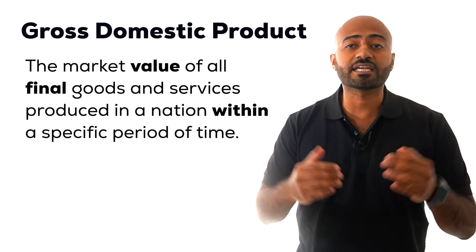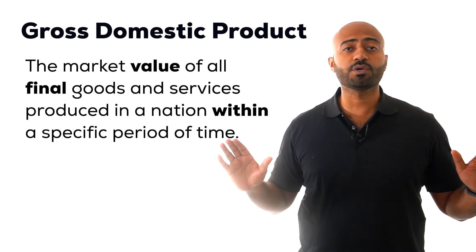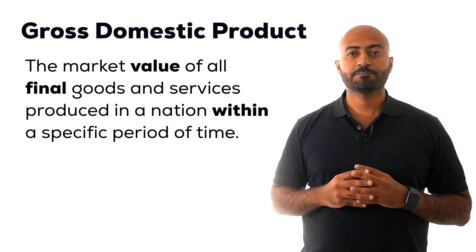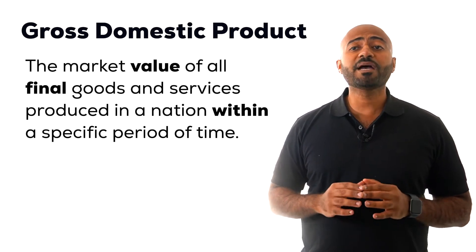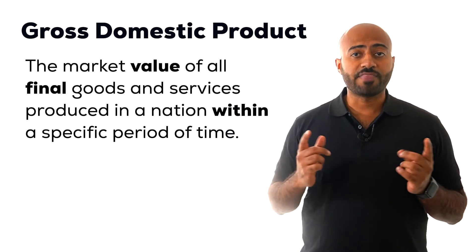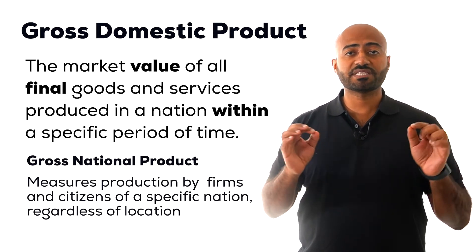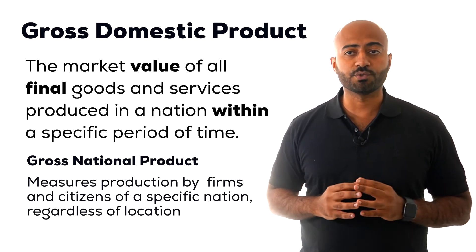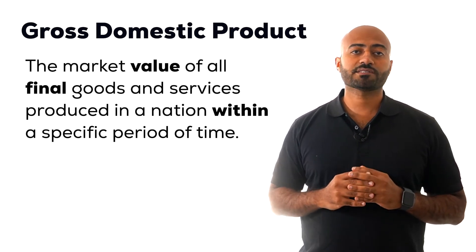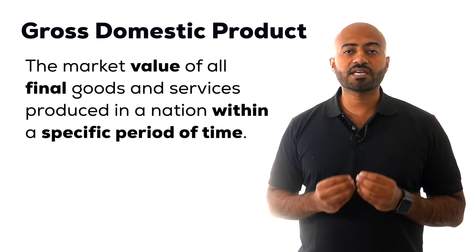GDP measures domestic production regardless of who is producing it — we are interested in the amount of activity within a country. There are other measures of income, such as gross national product, which measures how much nationals of a specific country produce regardless of their location. Both are measures of economic activity, but GDP is used more often in the US.